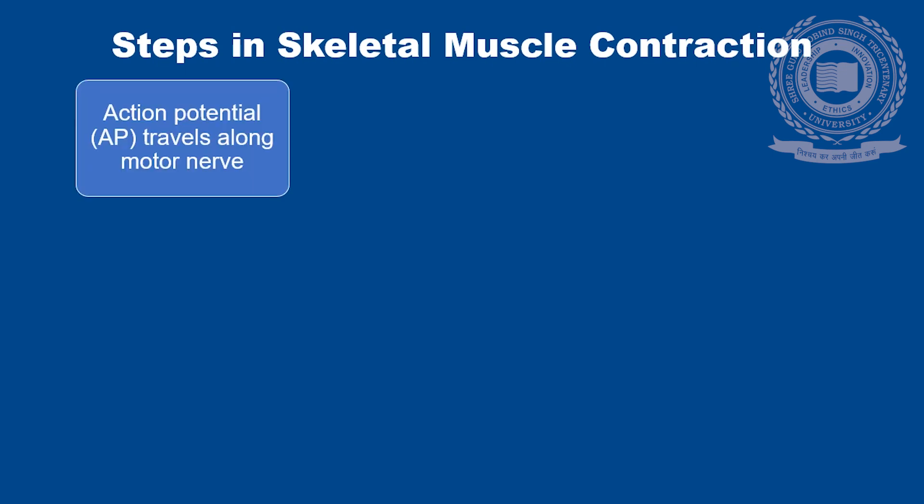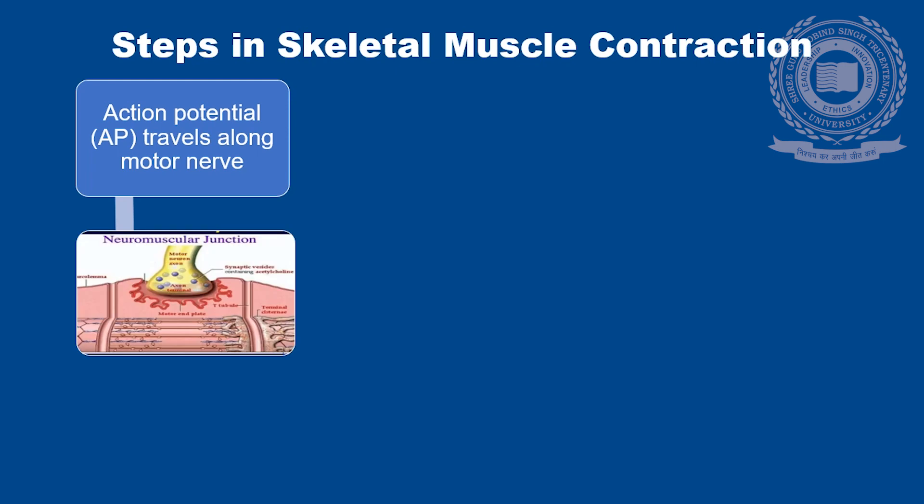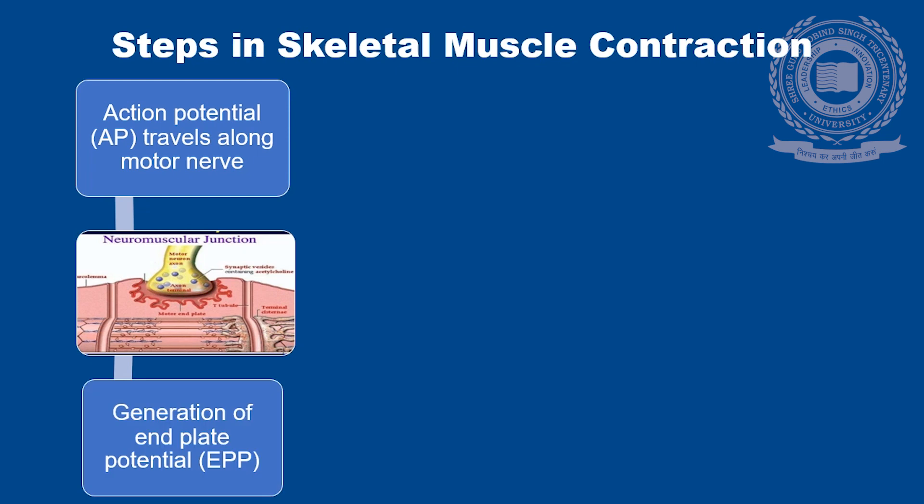Before learning the molecular basis of skeletal muscle contraction, let's revise the general mechanism of muscle contraction. When a nerve is stimulated, an action potential is developed which travels along the motor nerve and there is release of acetylcholine at the neuromuscular junction, which causes generation of end plate potential.